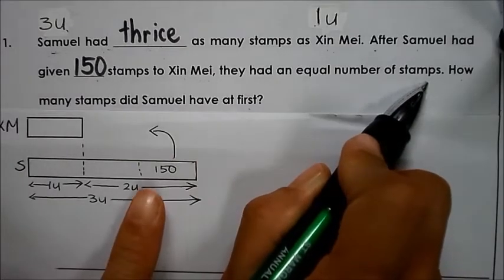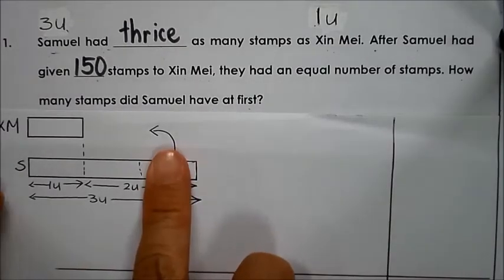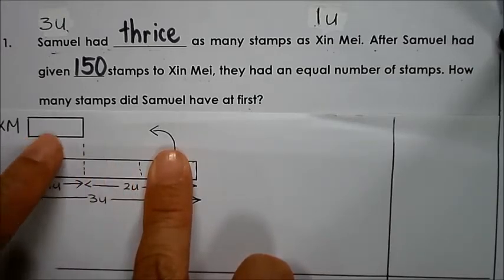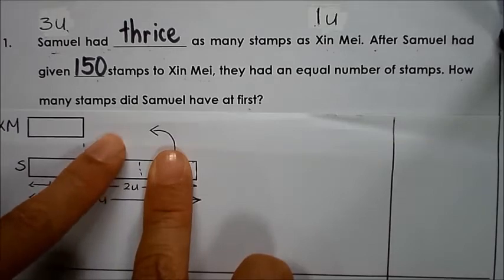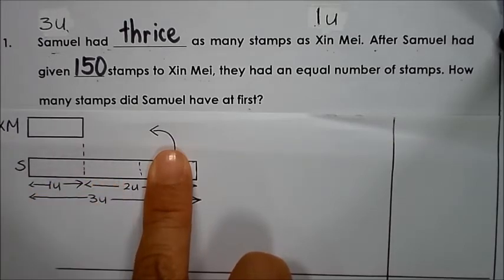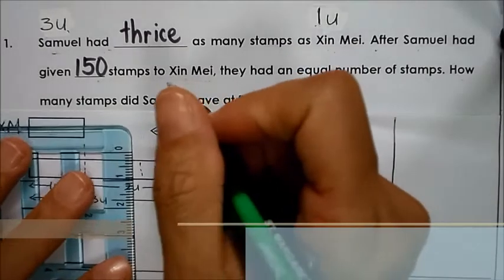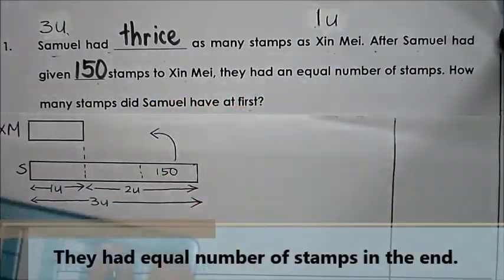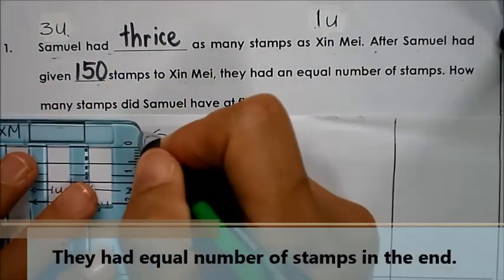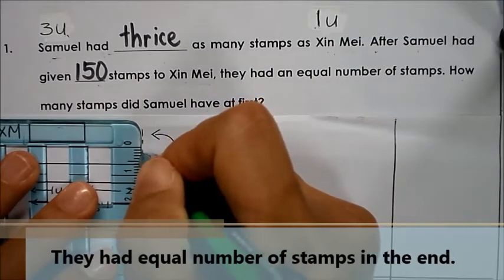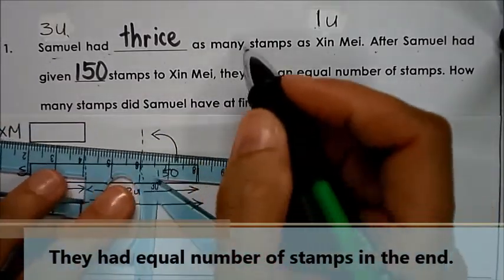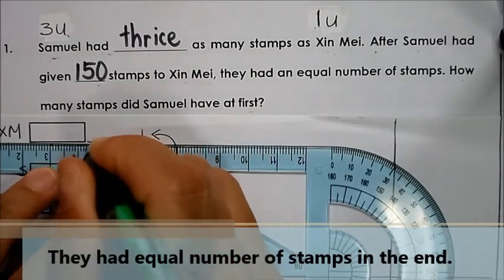So after giving away 150 stamps, this is what Samuel had left. And in the end, Singmay is going to have the same number of stamps as Samuel — they will have an equal number. So I'm going to draw to show that both of them have equal number of stamps.